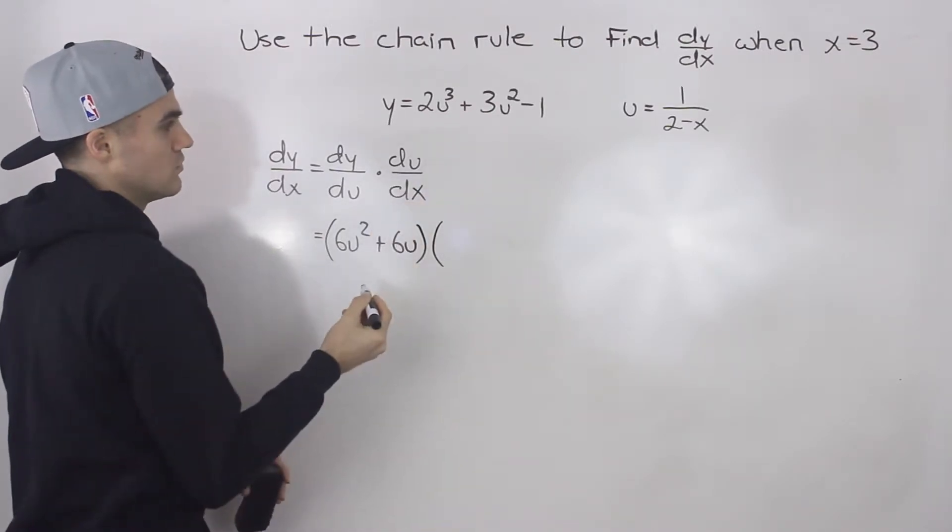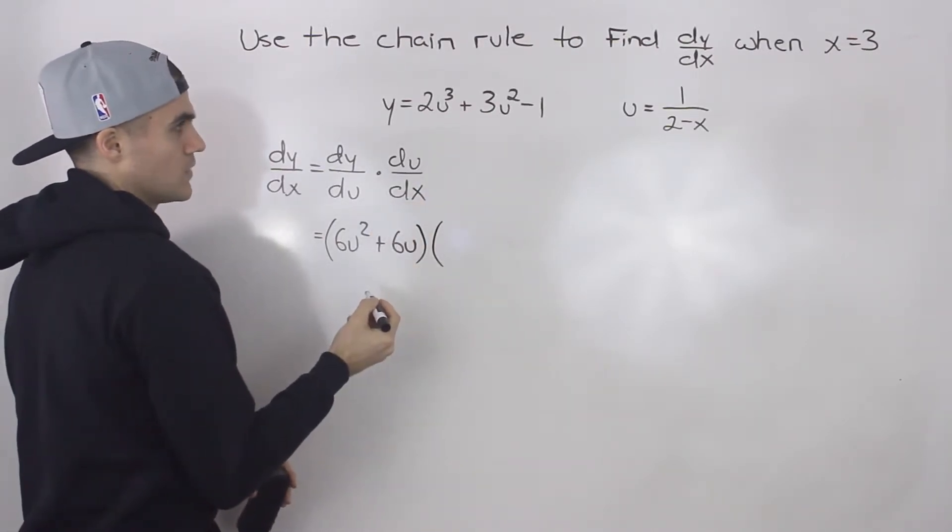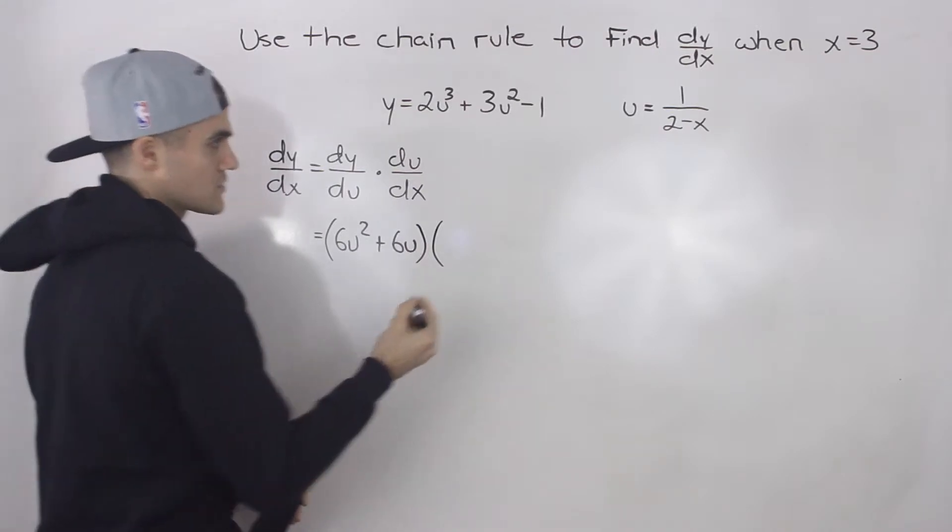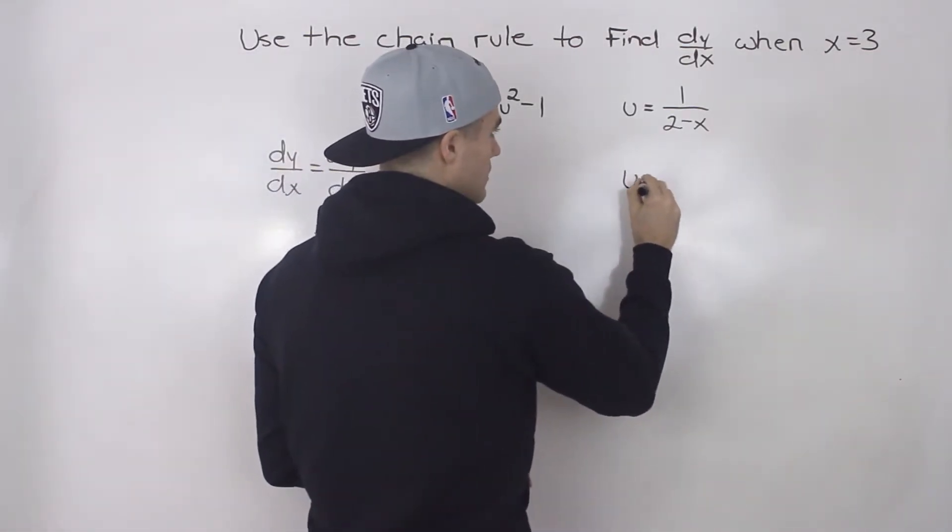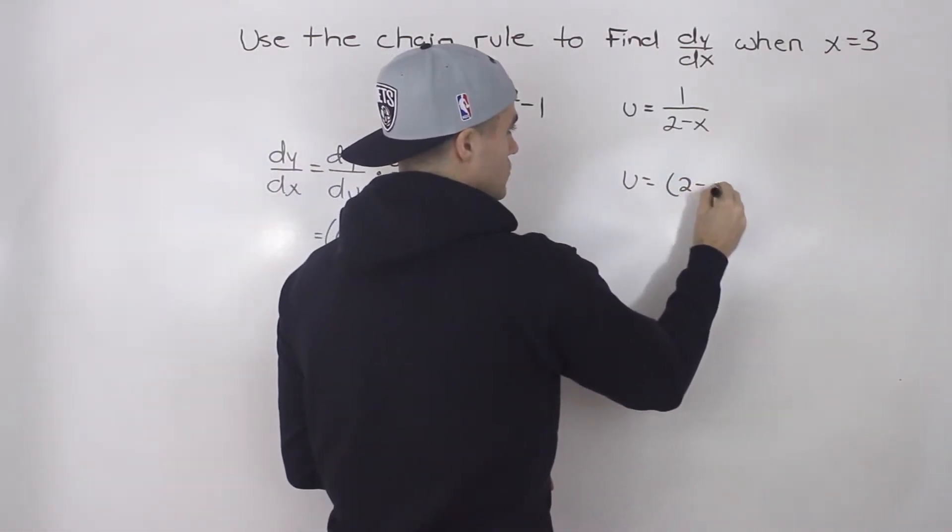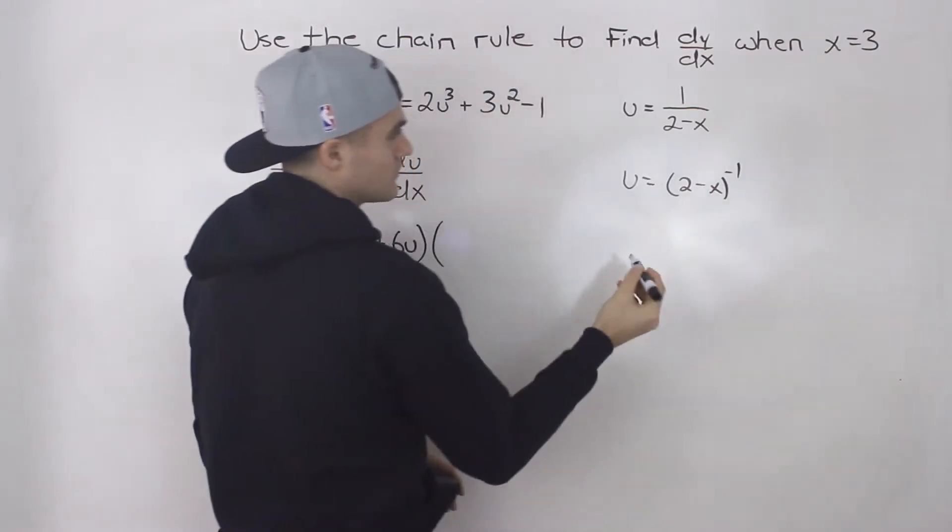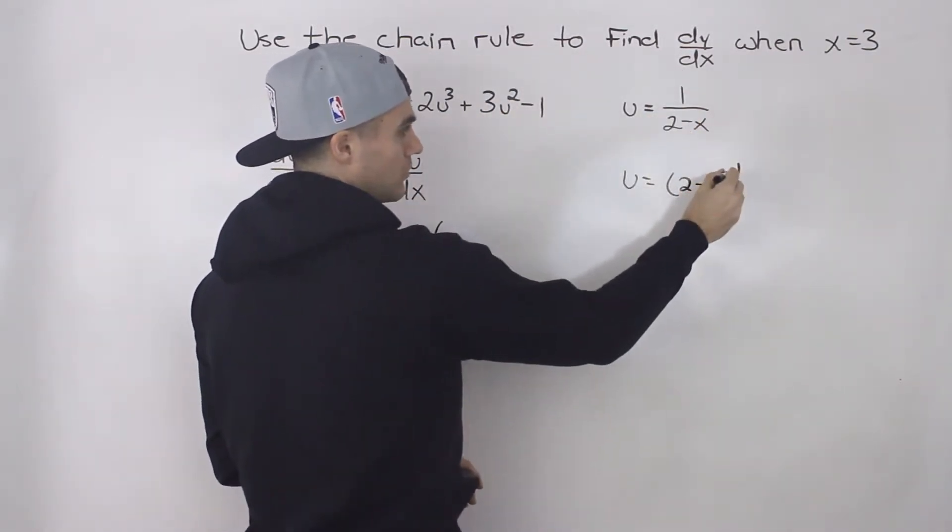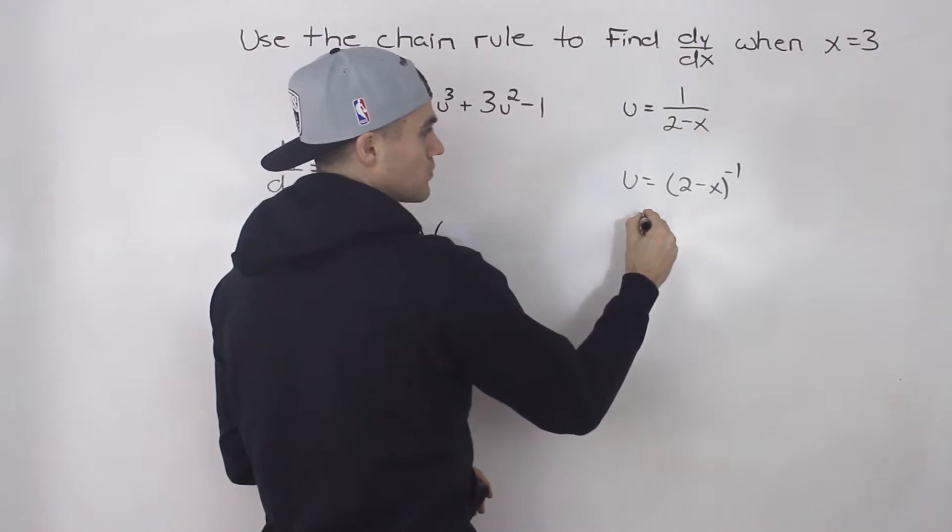And then du/dx, we would, a couple of different things we could do here. Let's actually rewrite this as 2 minus x to the power of negative 1. So I'm going to bring it up. And then we can apply the chain rule on this. So we would bring the negative down.